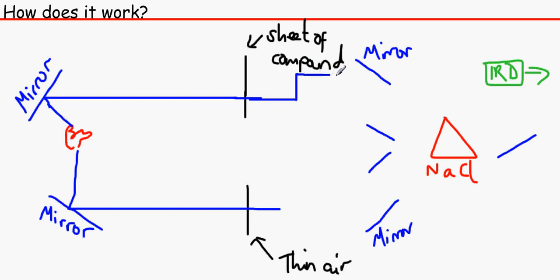It bounces off the mirror, bounces off the other mirror, through sodium chloride. This does the same as well. Through sodium chloride where it's bounced off again, and then into the infrared detector where it compares the two transmittances and displays it on the graph.